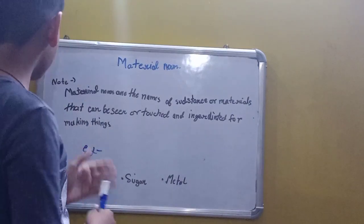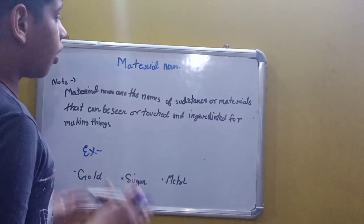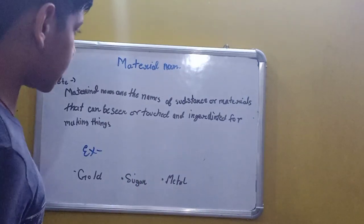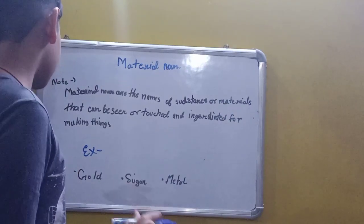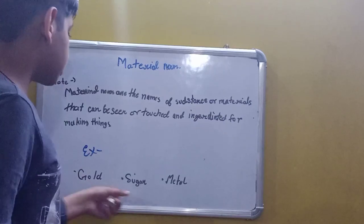Material noun: Material nouns are names of substances or materials. They can be seen as ingredients for making things. For example: gold, sugar, metal.